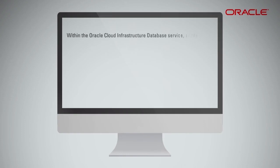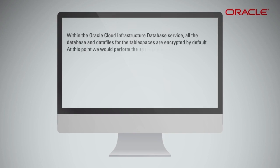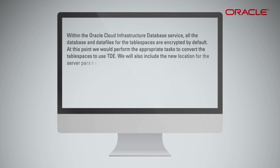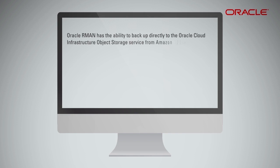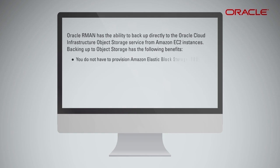Within the Oracle Cloud Infrastructure database service, all the database and data files for the table spaces are encrypted by default. At this point, perform the appropriate tasks to convert the table spaces to use TDE. Also include the new location for the server parameter file in the cluster registry for database configuration using the srvctl command. Oracle RMAN has the ability to back up directly to the Oracle Cloud Infrastructure Object Storage service from Amazon EC2 instances. Benefits include not having to provision Amazon Elastic Block Storage, EBS, on the source instance to store your RMAN backup, and object storage provides unlimited storage.